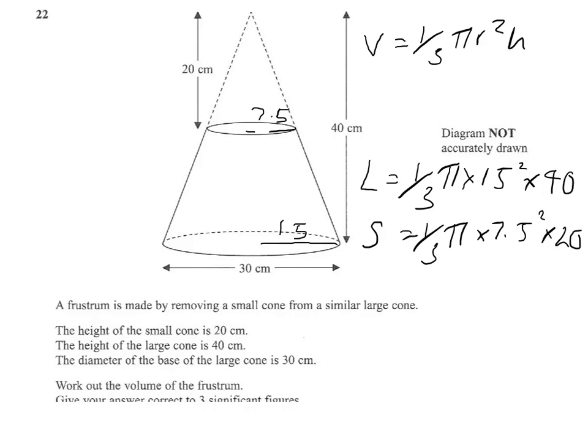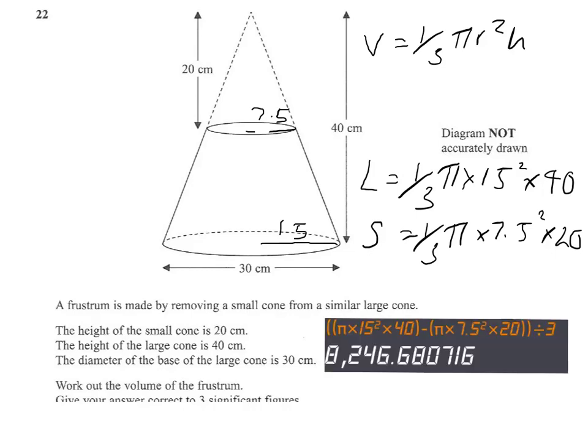So I'll now tap that through on the calculator and show you what you should put on the calculator screen to get the answer in one go. The way I've done this on the calculator is I have ignored the one-third, worked out pi times 15 squared times 40 and taken away pi times 7.5 squared times 20, and when I've got the answer to that, I've divided by 3 to get the one-third.